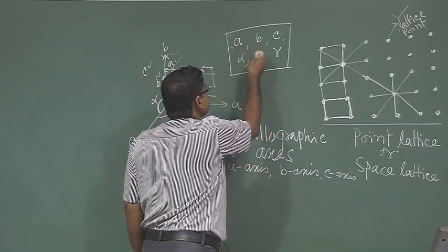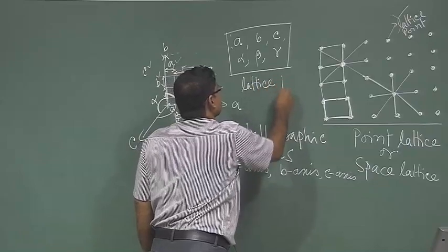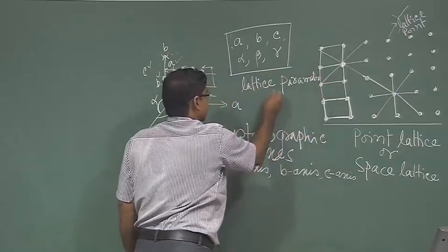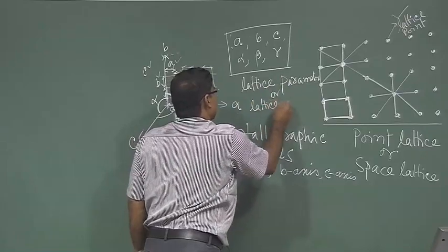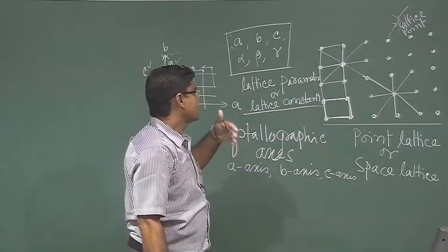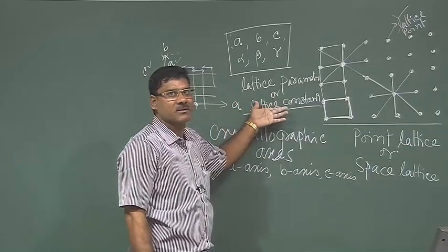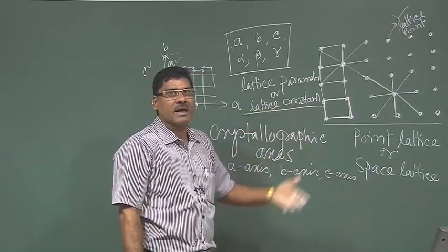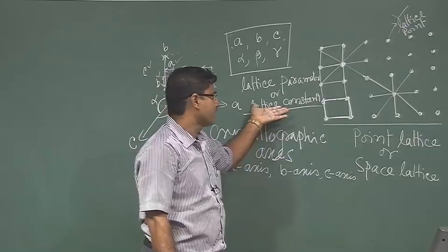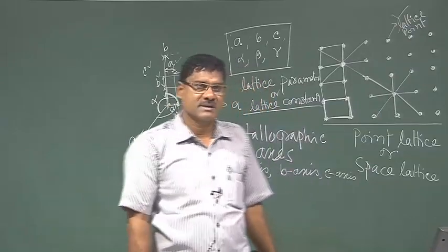These six parameters are called lattice parameters or lattice constants. For each lattice, these parameters will vary and we will get different unit cells for different space lattices. We will continue this discussion in the next class.